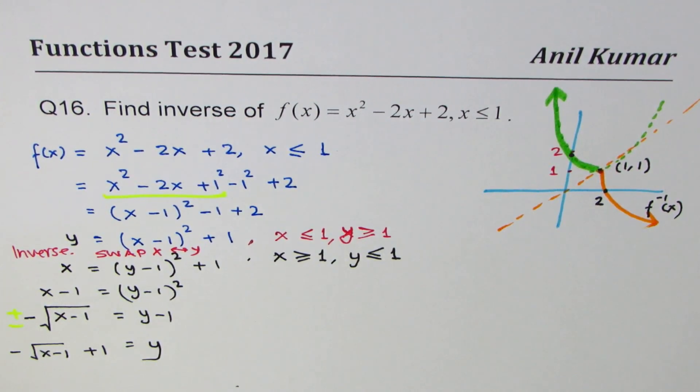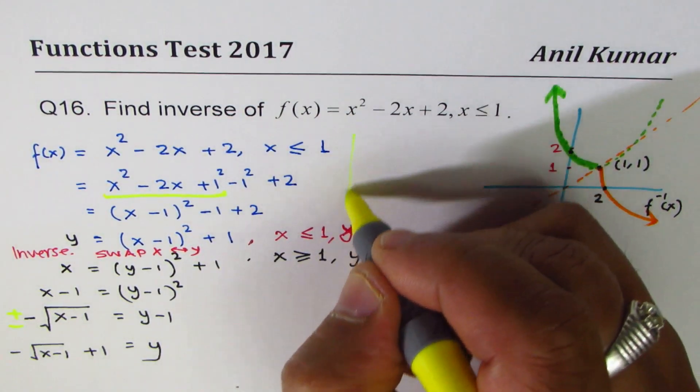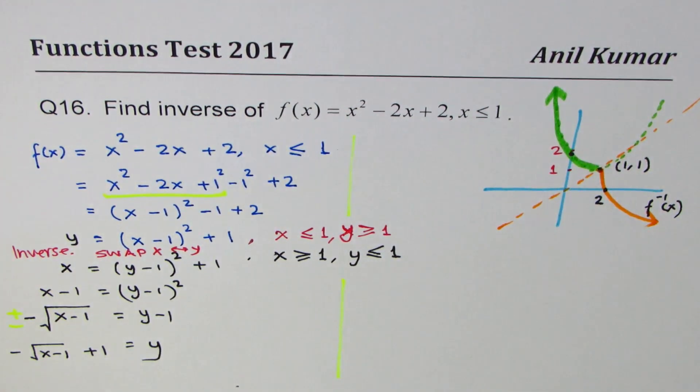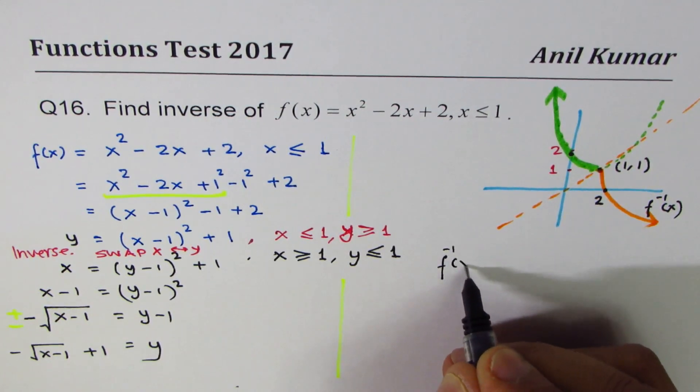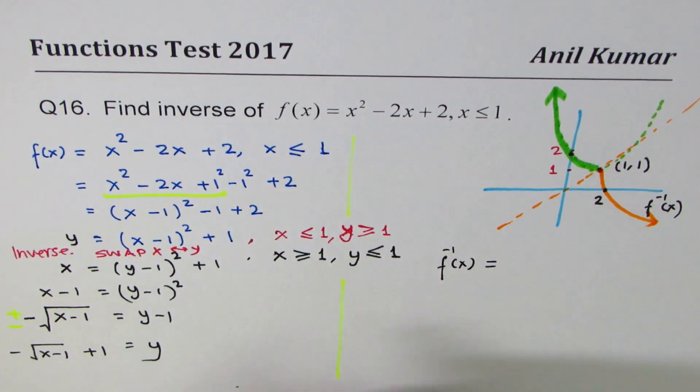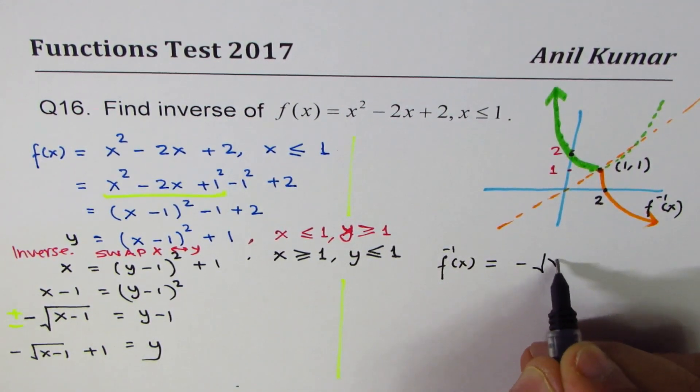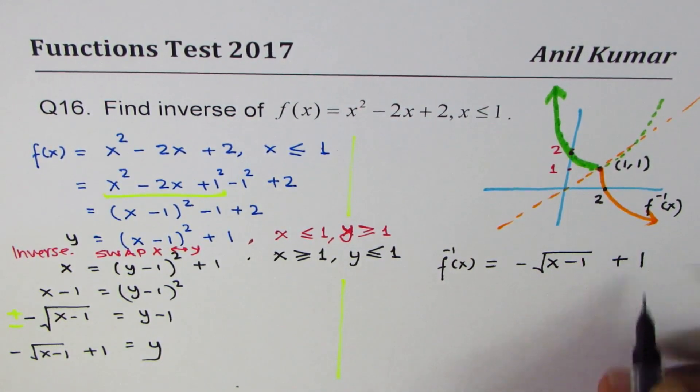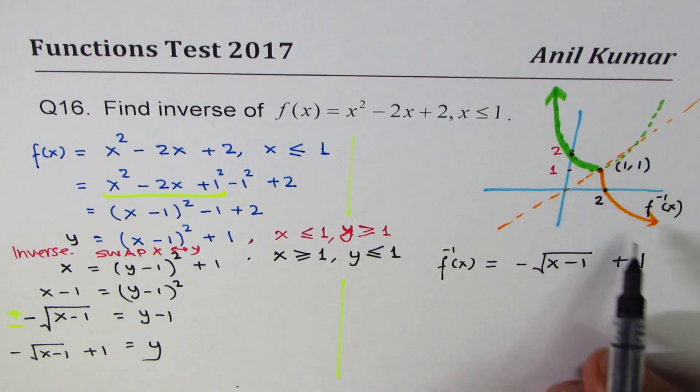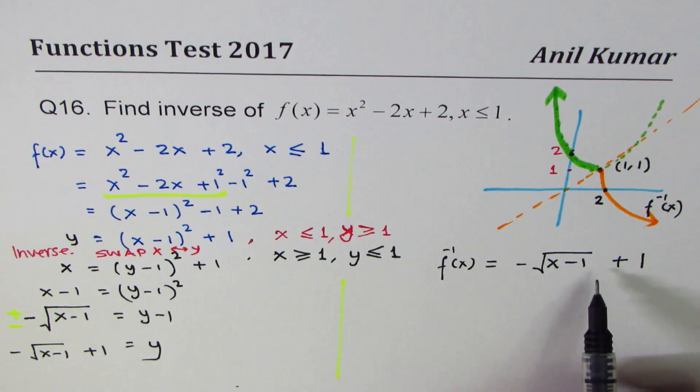Now we can solve for y: -√(x - 1) + 1 = y. Let me write down the inverse which we have got from all this. f⁻¹(x) = -√(x - 1) + 1. Look at your inverse function. Does it match with the equation?